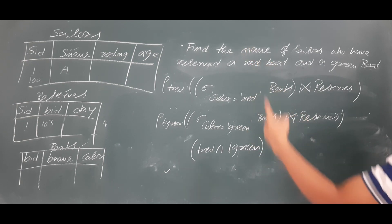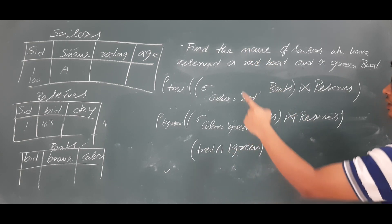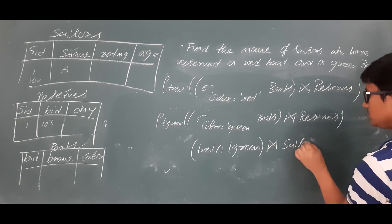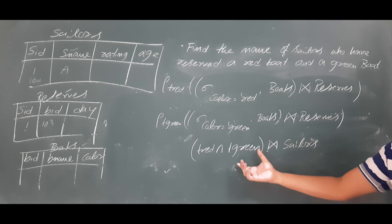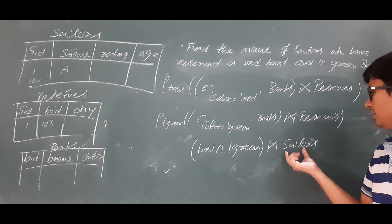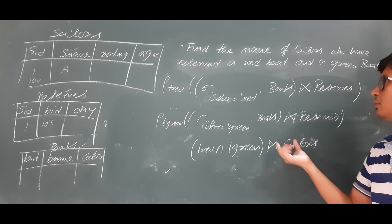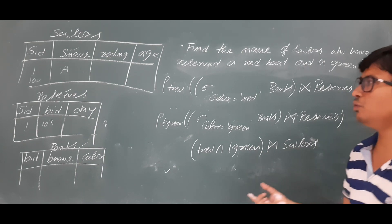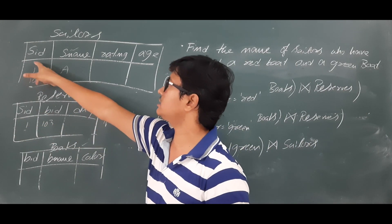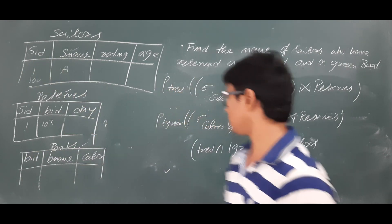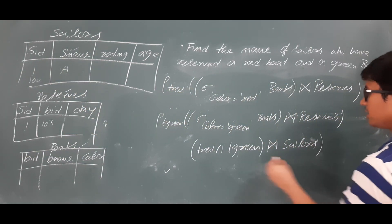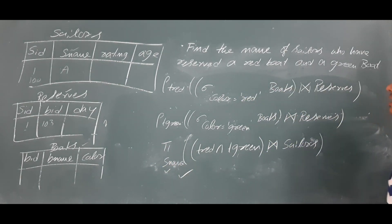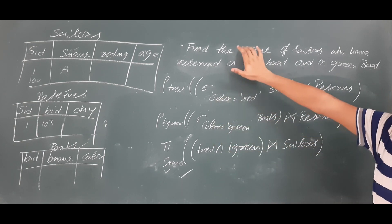To identify the names, I apply a natural join of this intersection result with the sailors table. This checks whether the sailor IDs exist in the sailors information, and once matched, I use the projection operator with the attribute sailor_name to retrieve the final names.